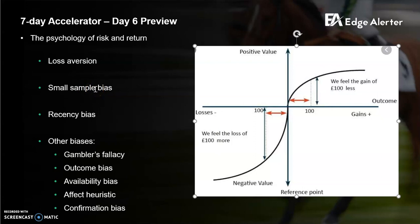The second bias most relevant to us is small sample bias — it's really common in betting. You hear about someone who tipped two winners in a row and think they're a genius. You want to be aware of what is a reasonable sample: we're talking dozens and dozens, even hundreds of samples, before you can actually work out if someone has found true edge. Recency bias is similar but focused on just what's happened recently — someone's on a hot streak, but what about how they went before that?